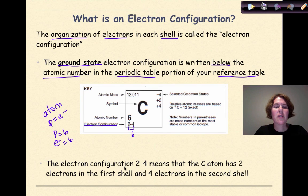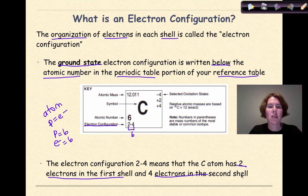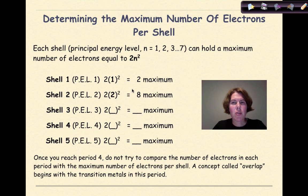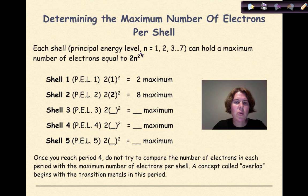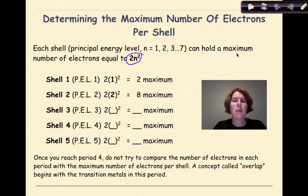Therefore the number of electrons total will be 6. The electron configuration 2-4 means that the carbon atom has 2 electrons in the first shell and 4 electrons in the second shell. To figure out how many electrons we have per shell, we're going to use this formula: 2n squared.